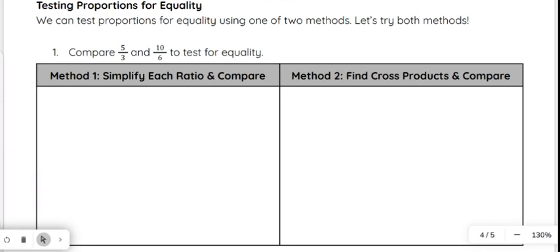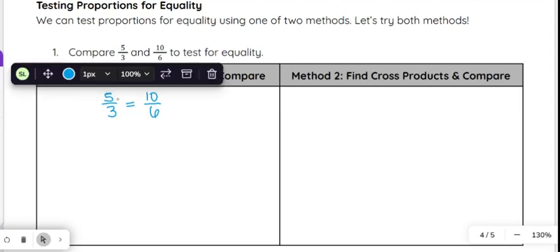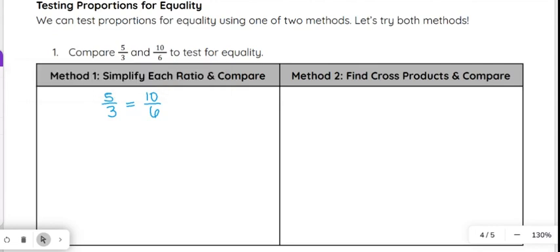So now we're going to go ahead and compare fractions or compare ratios to test a proportion for equality. So what that means is we're going to look at, for example, 5 over 3 and 10 over 6 like we just talked about. And we're going to talk about how we actually know if these are equivalent. I'm using this familiar example that we just went through to make it a little simpler to see what we're actually doing. So two methods here, two options of how you can actually compare these and test for equality.